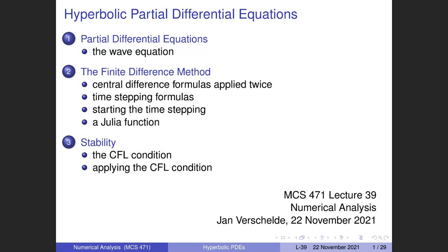As everywhere in this course, the algorithms are defined by Julia functions. We will run a Julia function to illustrate the problem of stability. The methods we derive are not unconditionally stable — there is a condition on the step size. If that condition is not satisfied, our method will not converge.